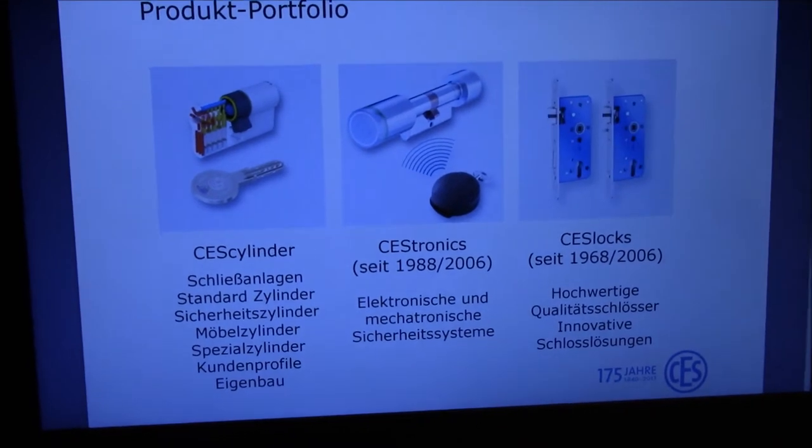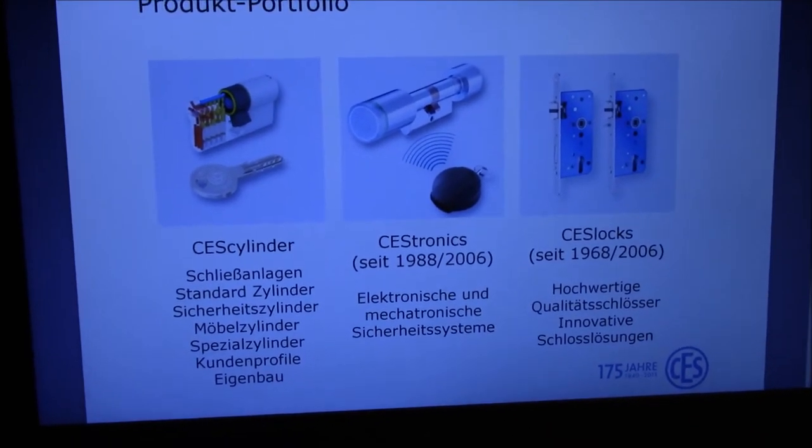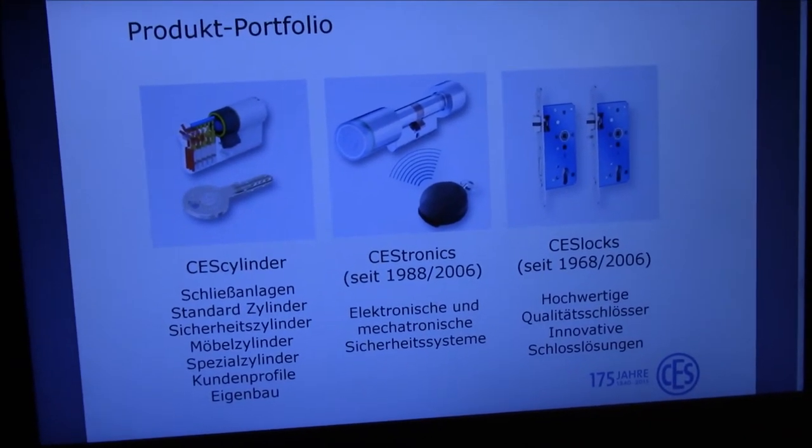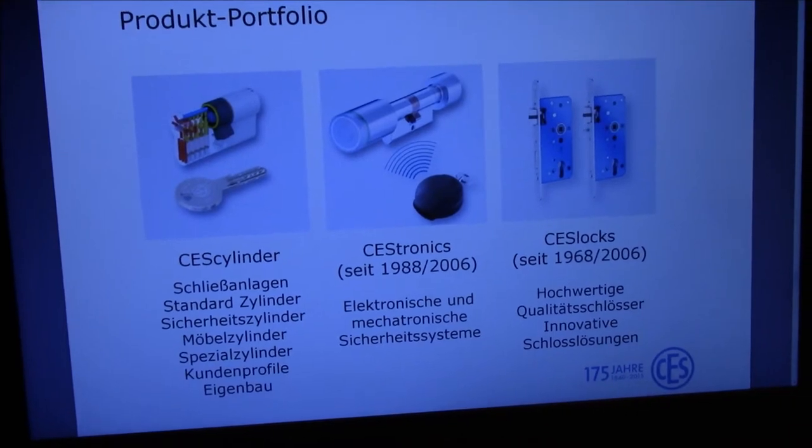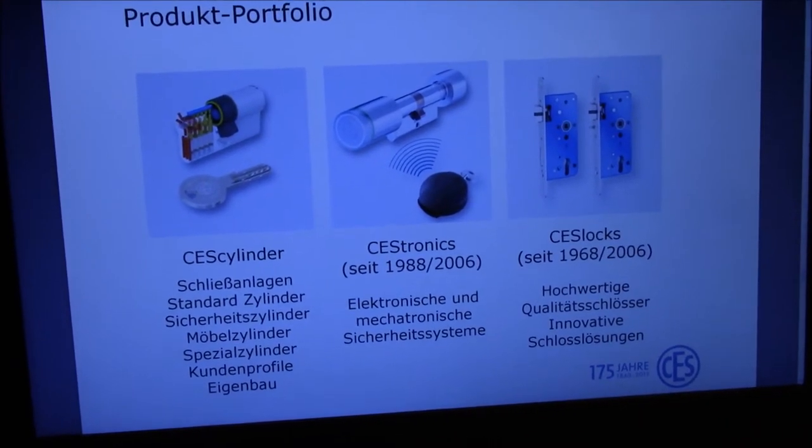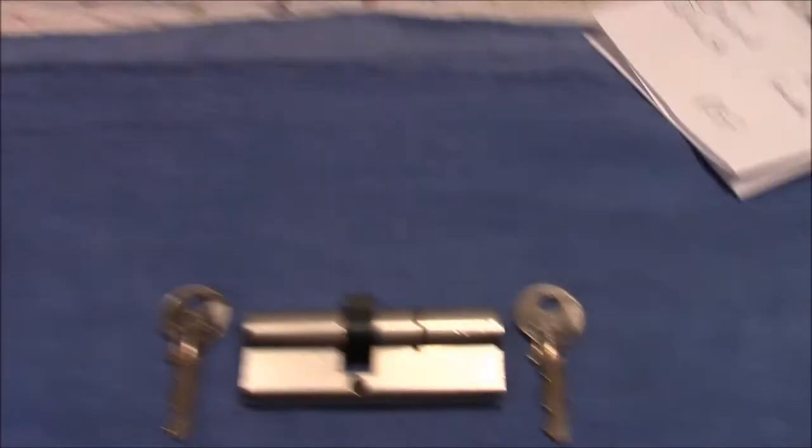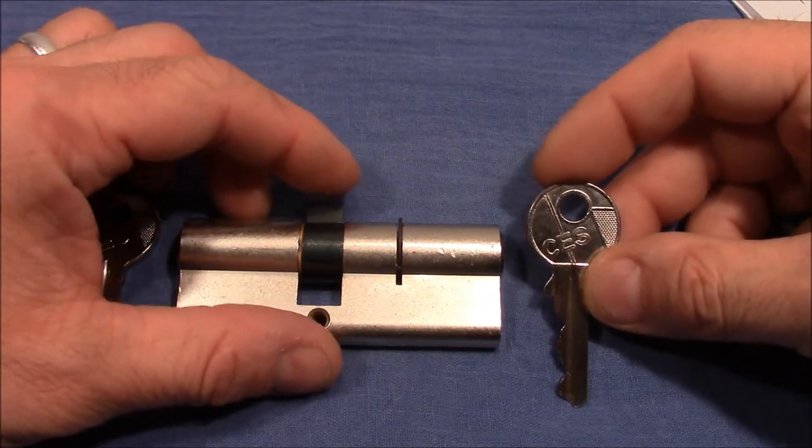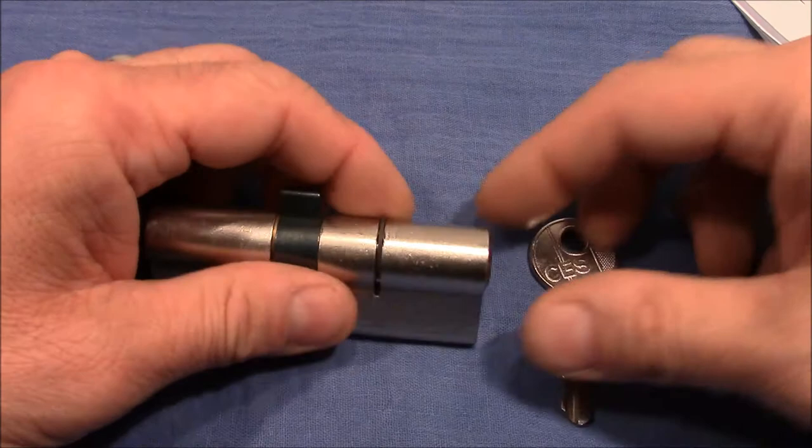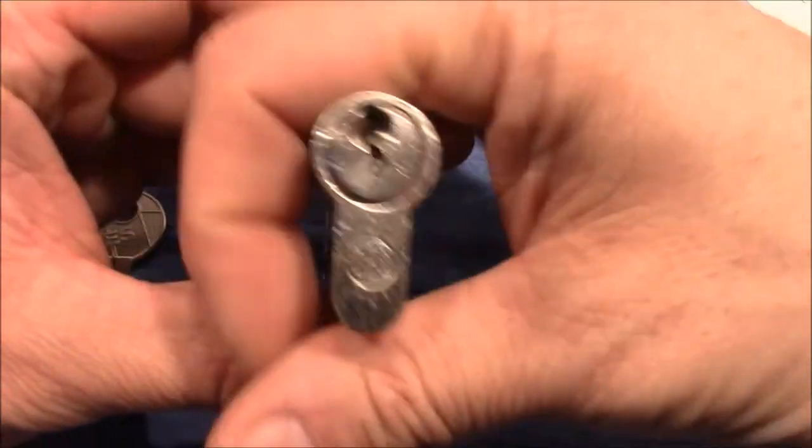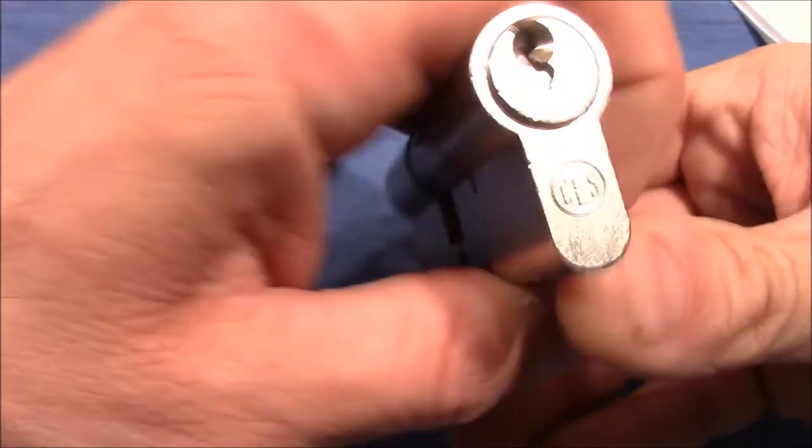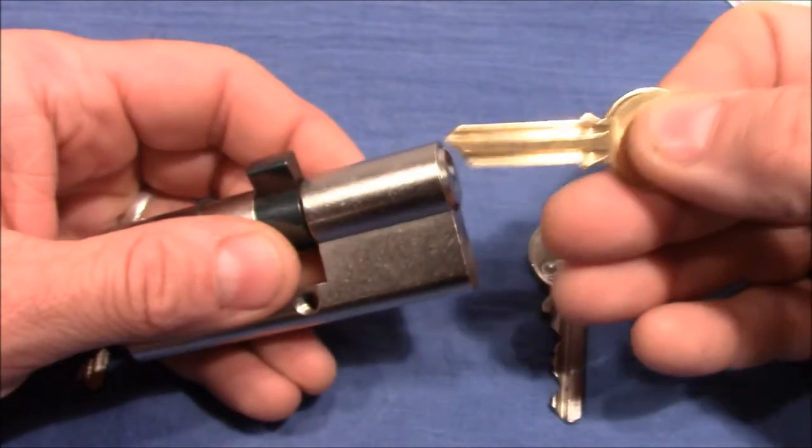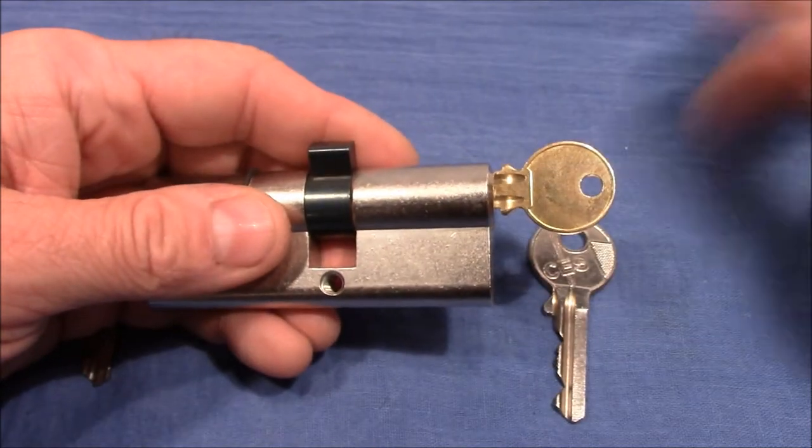Then Tronics is the electronic part of security and access systems and Locks make high quality locks and provide innovative solutions. So that's what CES is, it's still producing in Germany and making locks of different kinds, for example also this basic pin tumbler that I have here. You can see it's a Yale keyway and here have a Yale blank, fits perfectly in the keyway.